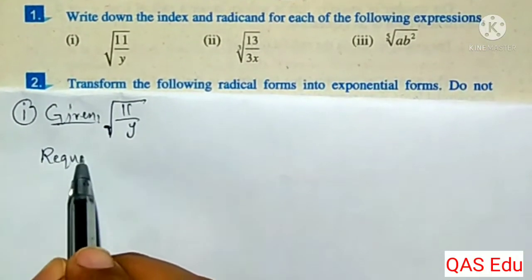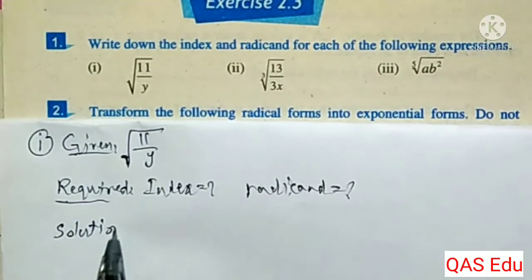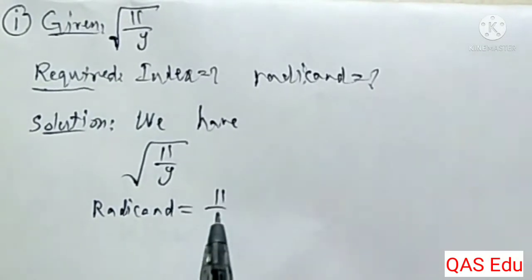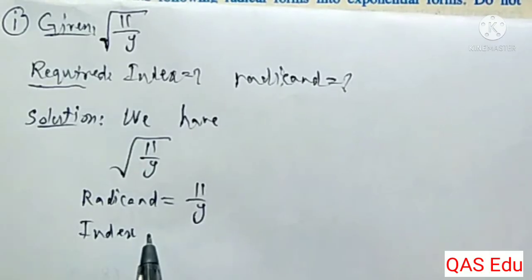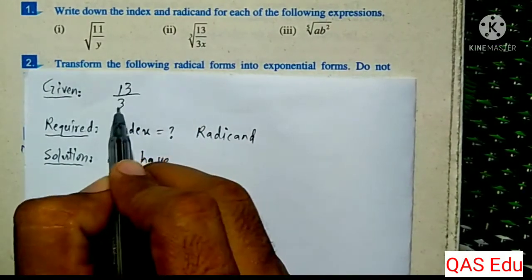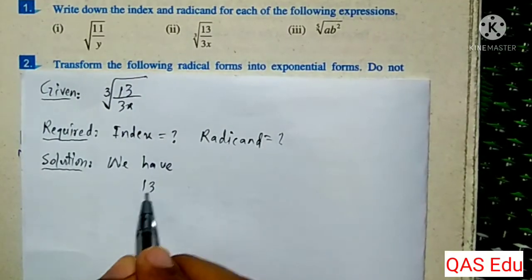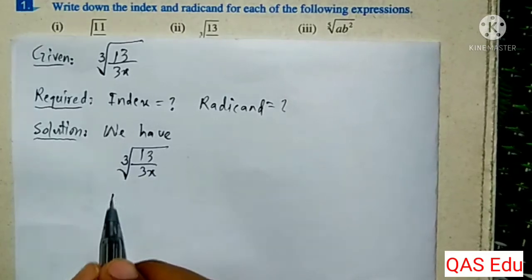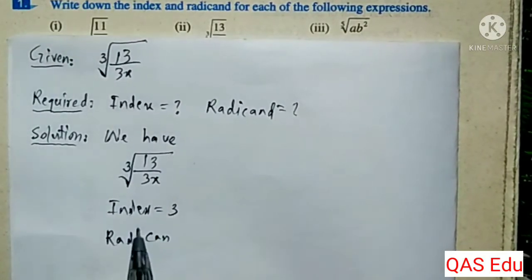What is the index or radicand? Solution: We have 11 over y. The radicand is 11 over y. The index is 11 over y. The root is 11 over y. For the next expression, the number 5 is 3 divided by 3x. The index is 11 over y. Number 6 is 13 divided by 3x. The index is 3 divided by 3x.